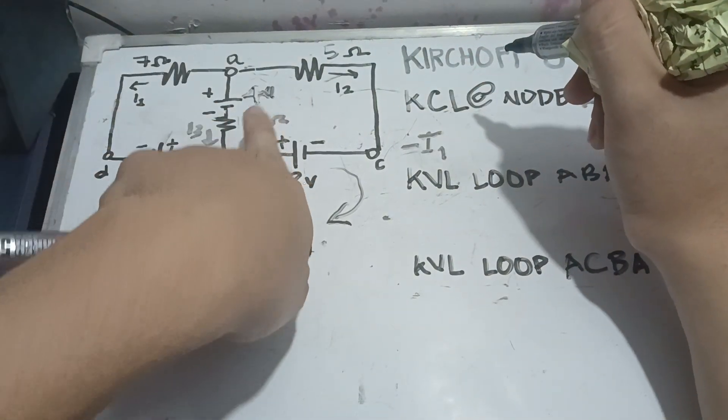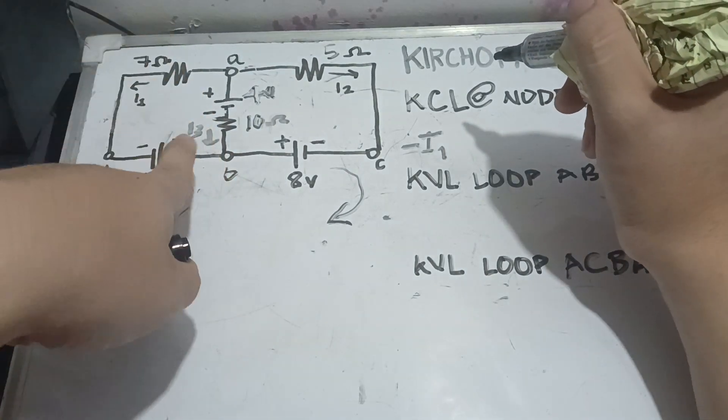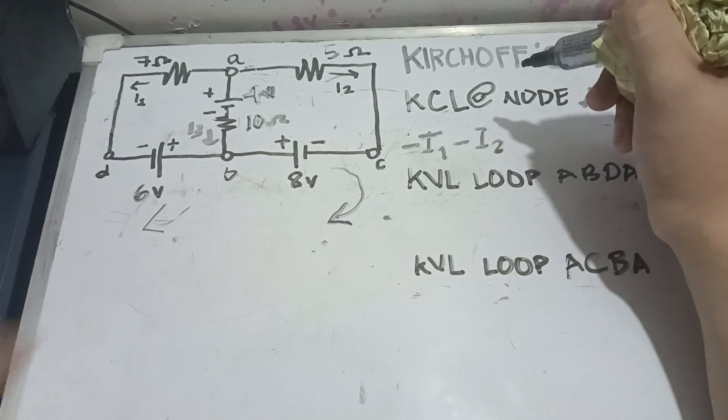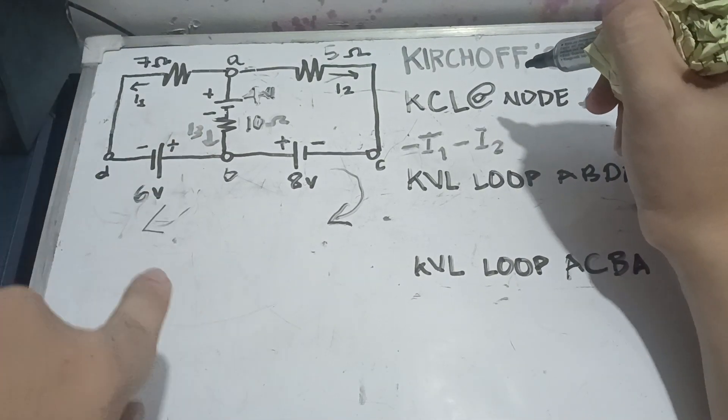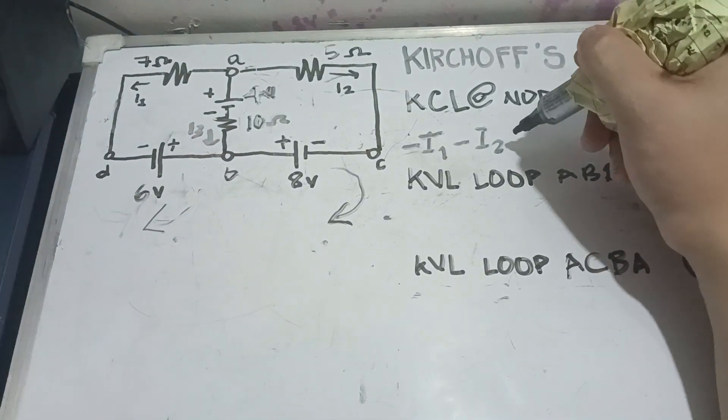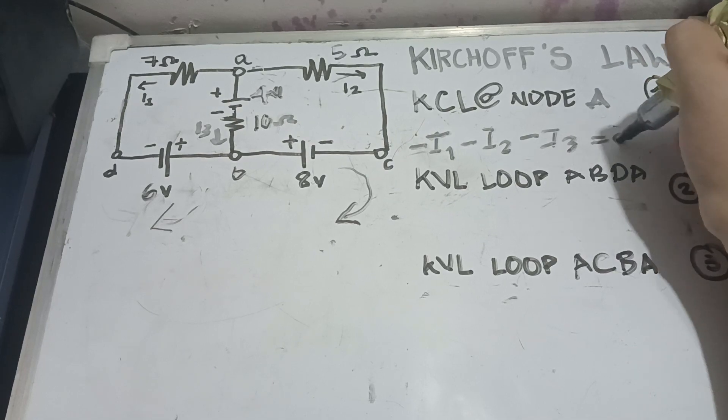Next, our I2 is also going away to the right side even though our node A is at the left side. So, it's going to be negative I2. Our I3 is also going downwards. Our node is at the upper part which means that it's going away. So, it's going to be negative I3 then equal to zero.